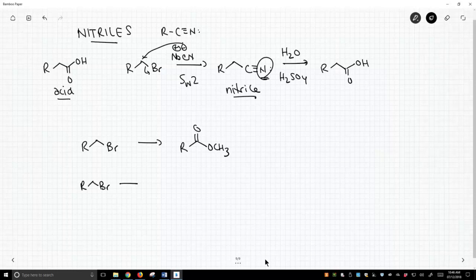Take your bromide, treat it with sodium cyanide. I'm not going to show mechanisms here, but that'll give you your nitrile via SN2. Go ahead and hydrolyze this to a carboxylic acid.